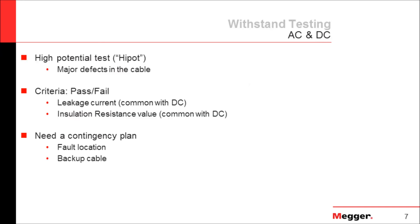A withstand test can be an AC or DC test, and it's commonly known as a high pot or high potential test. Essentially what you do is bring up the voltage to a certain level and hold it there for a certain amount of time. If the cable holds the voltage, it passes. If it doesn't hold the voltage, it fails.